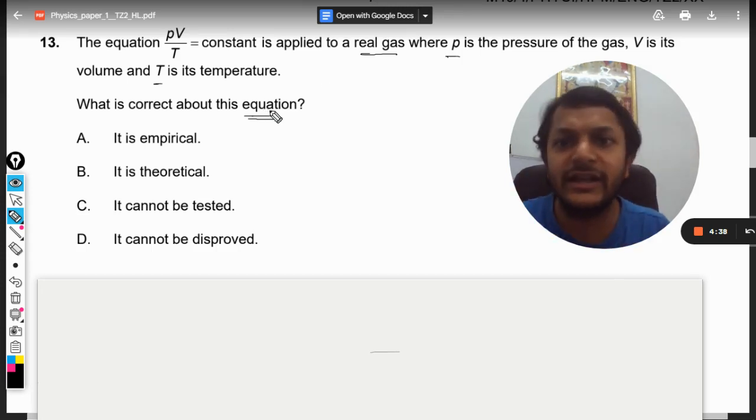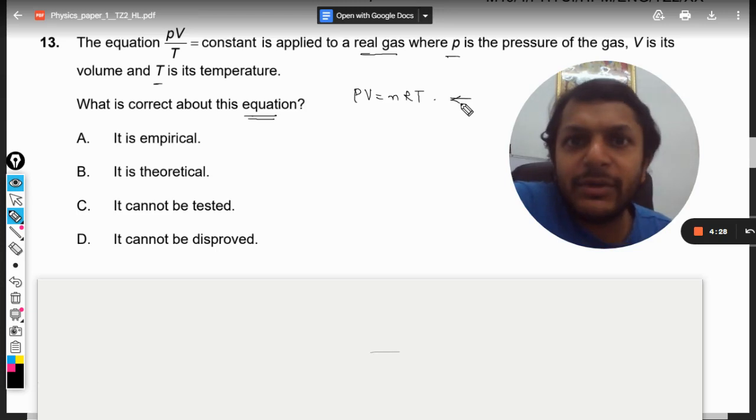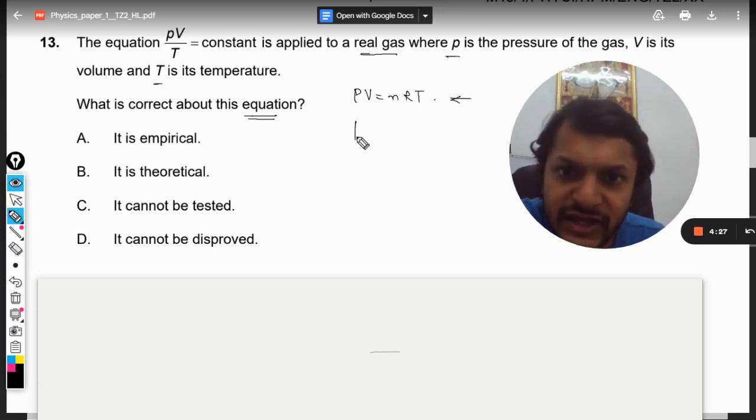First of all, PV equals nRT is the ideal gas equation and that is valid only and only for ideal gases. So this equation is valid only on ideal gases. This cannot be applied on the real gases.